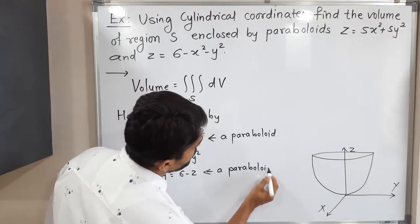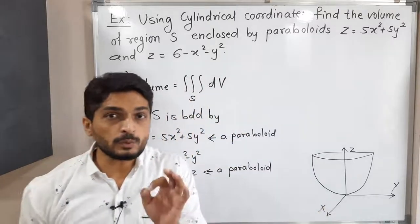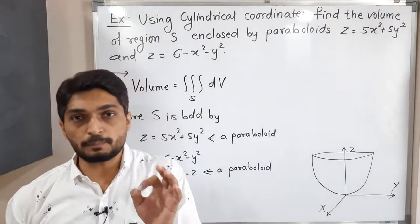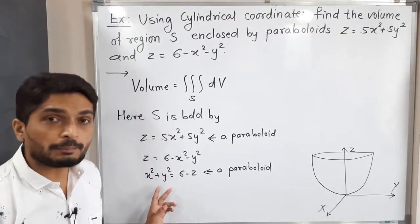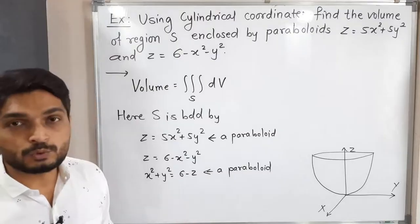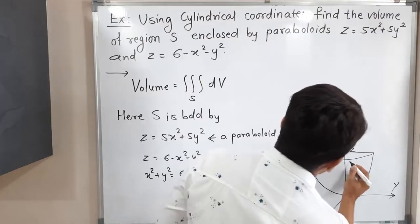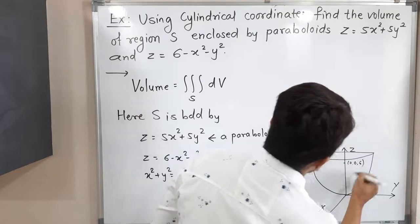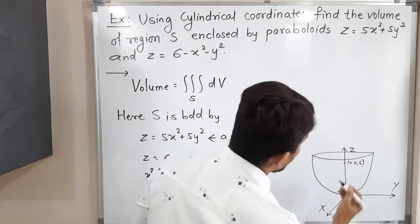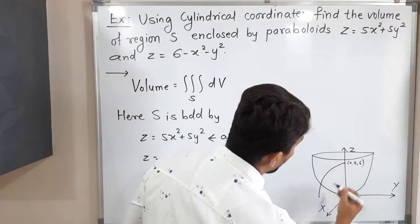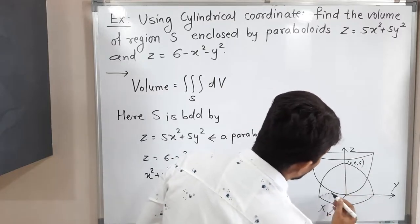This is a paraboloid in the downward direction around the z-axis. To find where it cuts the z-axis, I put x = 0 and y = 0, giving z = 6. So this paraboloid passes through the point (0, 0, 6). Let me draw a rough sketch — the paraboloid will be like this, opening downward around the z-axis and passing through that point.